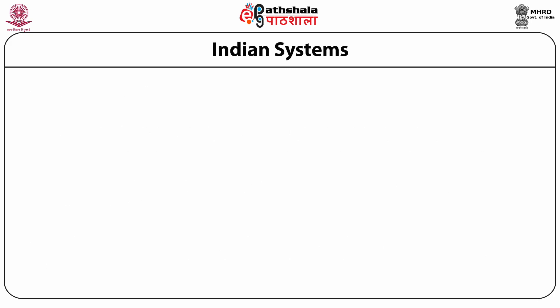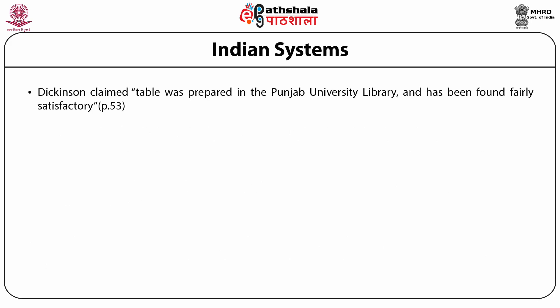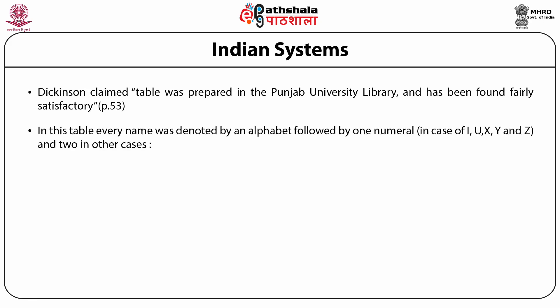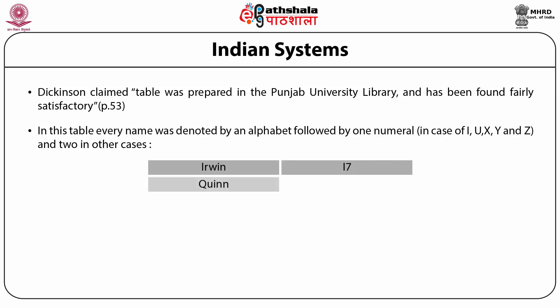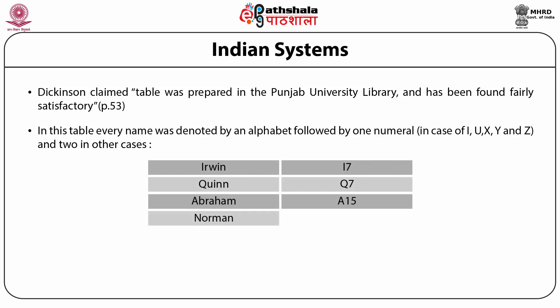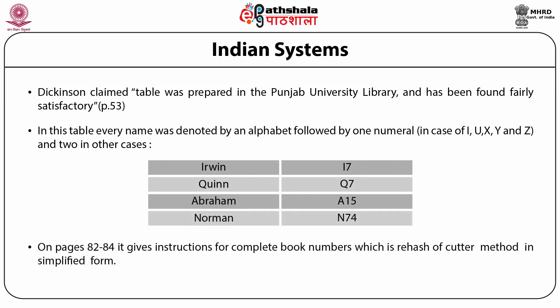Asha Don Dickinson's table was prepared in Punjab University Library and found fairly satisfactory. In this table, every name was denoted by an alphabet followed by one numeral in case of I, U, X, Y and Z, and two numerals in other cases. For example, Erwin got the number I7, Quinn got the number Q7, Abraham got the number A15, and Norman got the number N74. On pages 82 to 84, it gives instructions for complete book numbers, which is a rehash of Cutter's method in a simplified form.